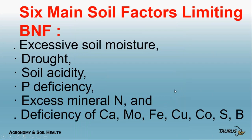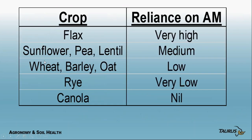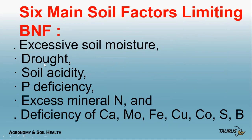The major factors limiting biological nitrogen fixation are: excess moisture, drought, soil acidity, phosphorus deficiency, excess nitrogen — you don't want too much N because you're growing these to fix N — and deficiency of calcium, molybdenum, iron, copper, cobalt, sulfur, and boron. And that's the end of Mike's portion.